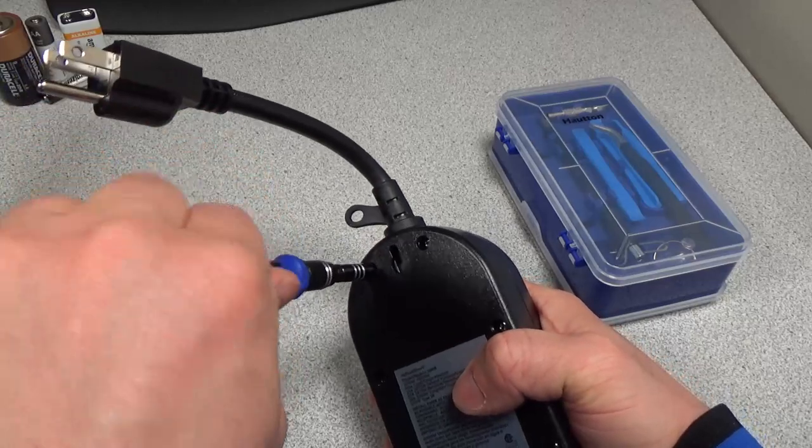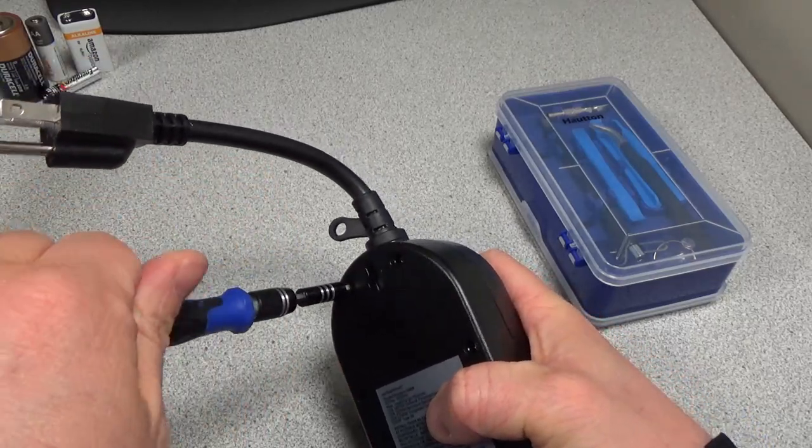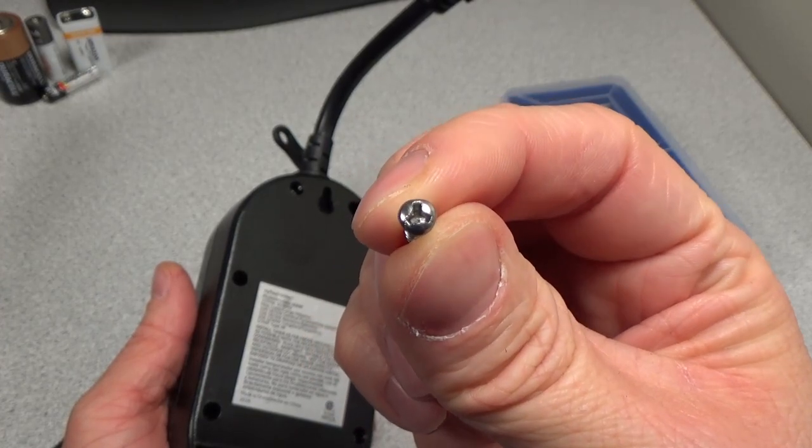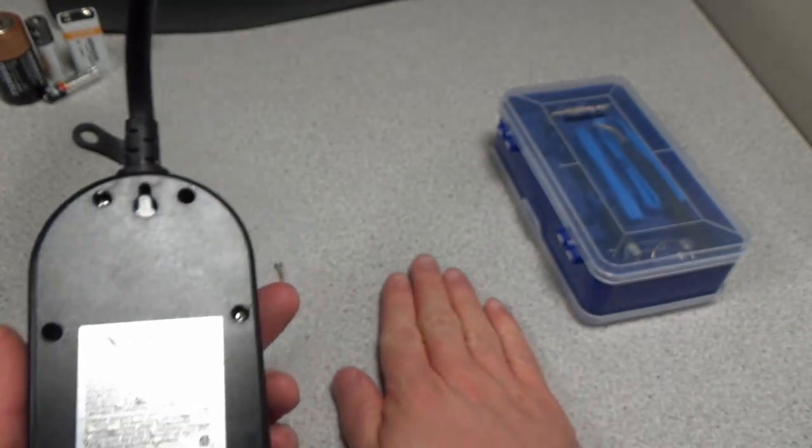This last screw doesn't strip out. The secrets shall be revealed. There you can see it now up close - three lobes on those screws.